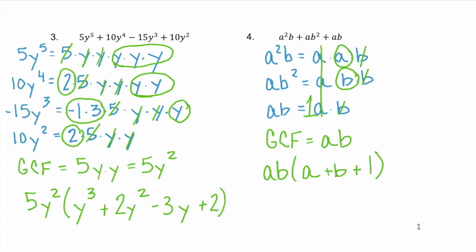Remember, when you factor, your factored form should have just as many terms as what you started with. So when we factored out our GCF, we went from 3 terms to 3 terms. After factoring, you can always check your answer by using the distributive property.